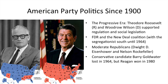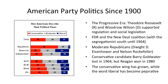You can tell from these electoral maps how tremendous Goldwater's loss was in 1964 and how tremendous Reagan's win was in 1980. The conservative wing has grown, while the word 'liberal' has become pejorative — sort of a dirty word — which happened basically around 1990.